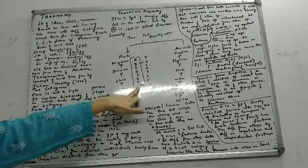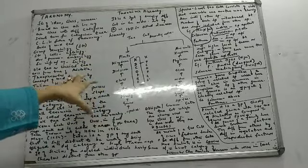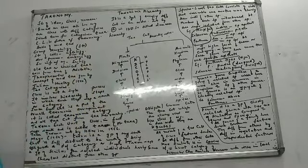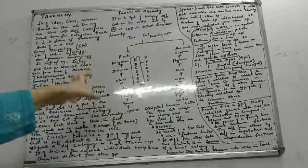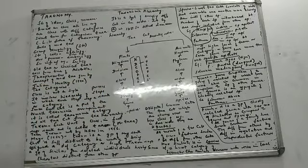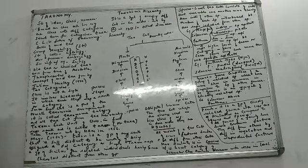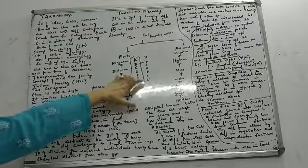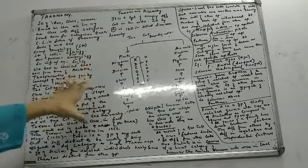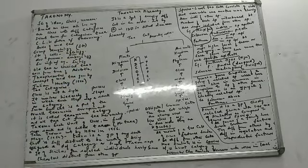Species is the lowest taxonomic category. It consists of all members which resemble one another very closely. The most important thing is that members of a particular species have the potential to interbreed — but they are reproductively isolated from other species. So three things about species: lowest taxonomic category, members are similar and can interbreed, and they are reproductively isolated from other species.